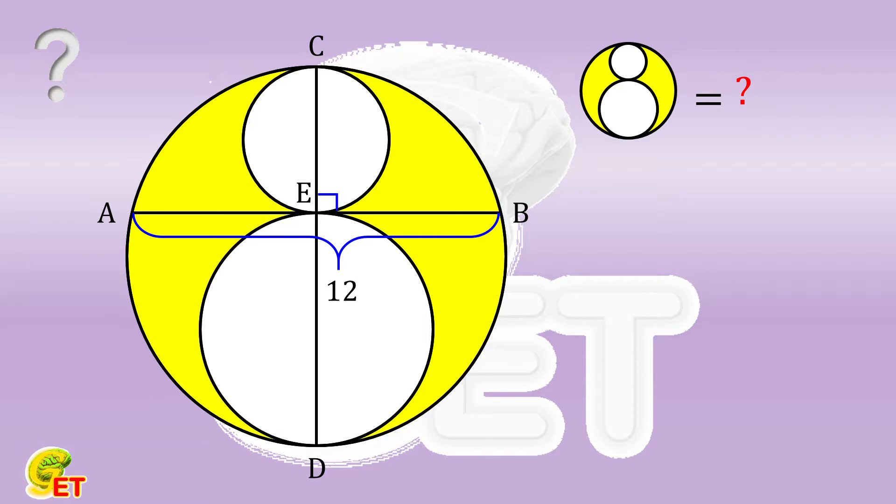Obviously, the area of the shaded part is equal to the area of the large circle minus the area of the two small circles. The area of the large circle is a quarter of pi times the square of CD. The areas of the two small circles are a quarter of pi times the square of ED and a quarter of pi times the square of CE respectively.